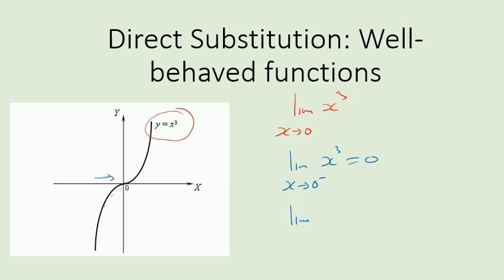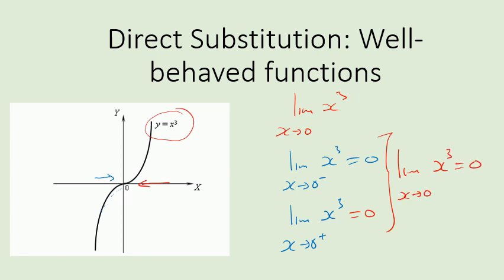The limit of x cubed as x approaches 0 from the right — as we get closer and closer to 0 from the right, we notice that the limit is 0. So we can see that the limit of x cubed as x approaches 0 is 0. Pretty straightforward.